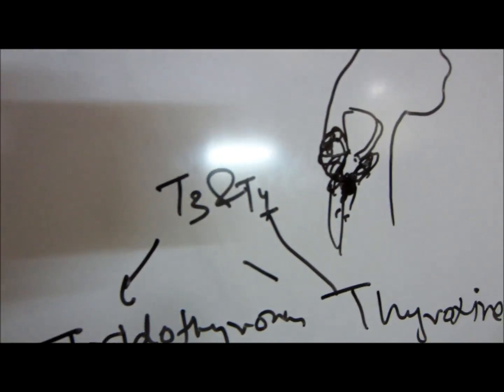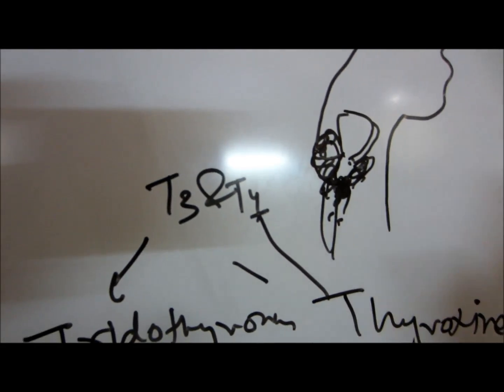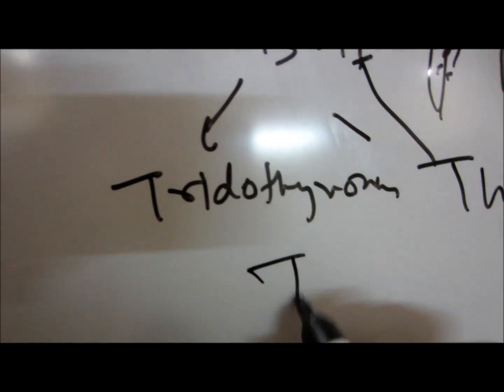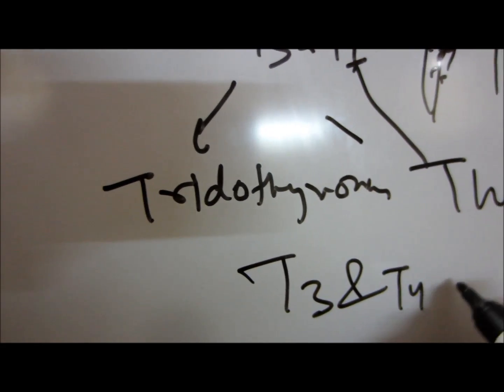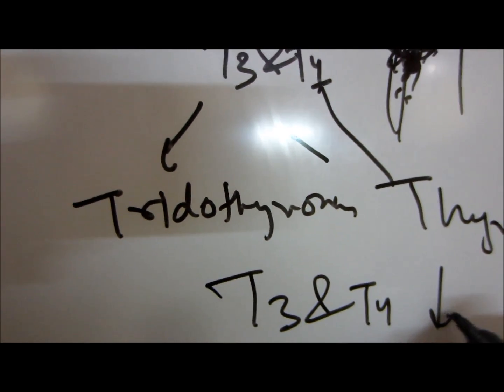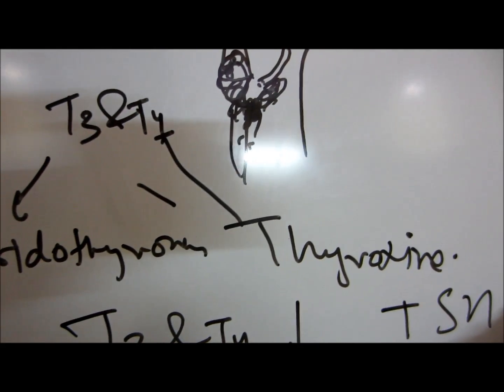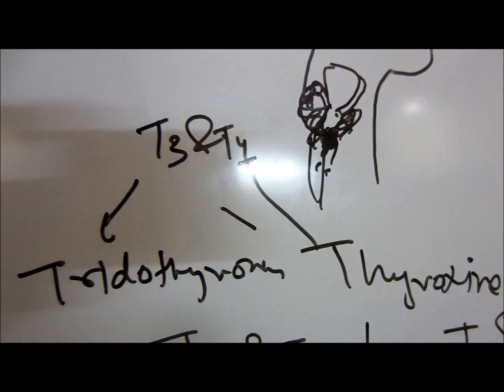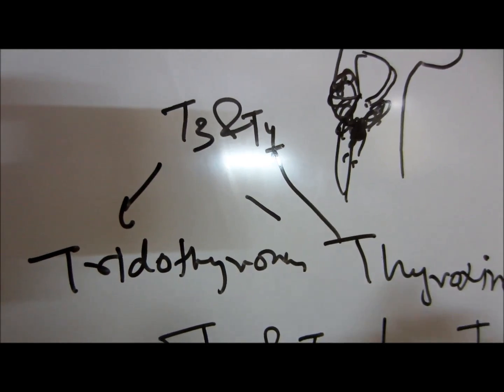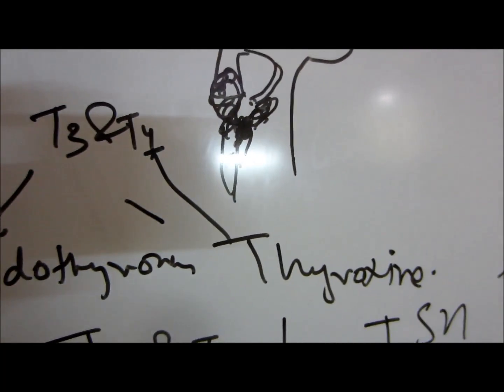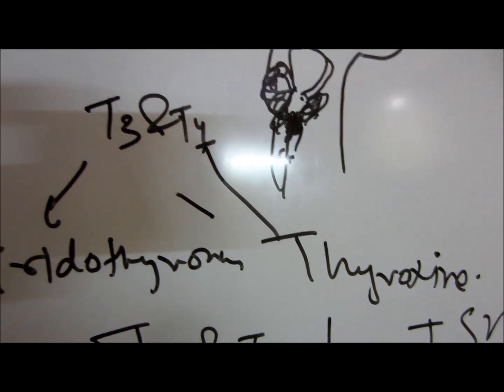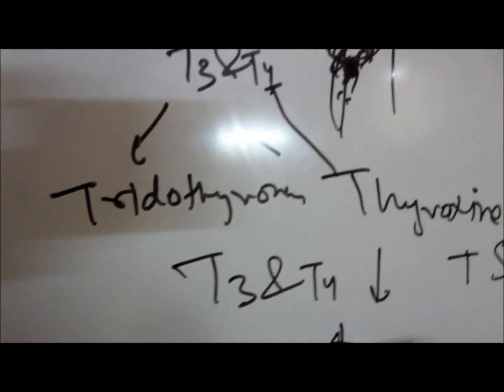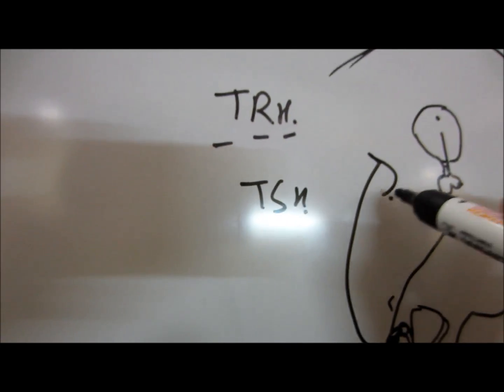What happens is when T3 and T4 levels are low in the blood, TSH levels increase. And when T3, T4 levels are high, the TSH levels are decreased. This negative feedback is actually carried out through the somatostatin.